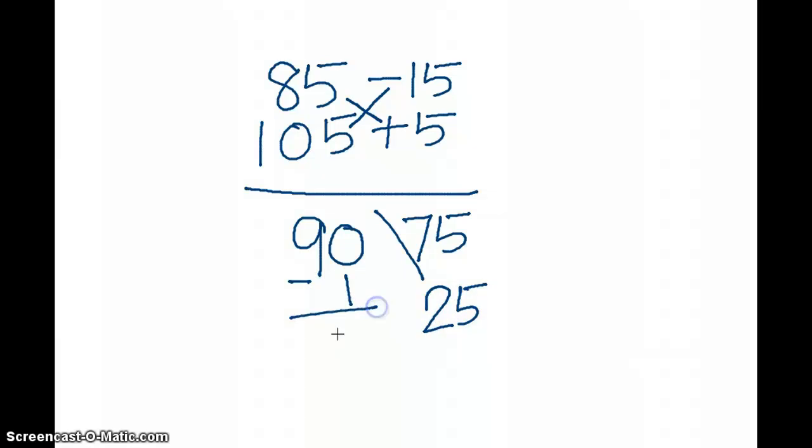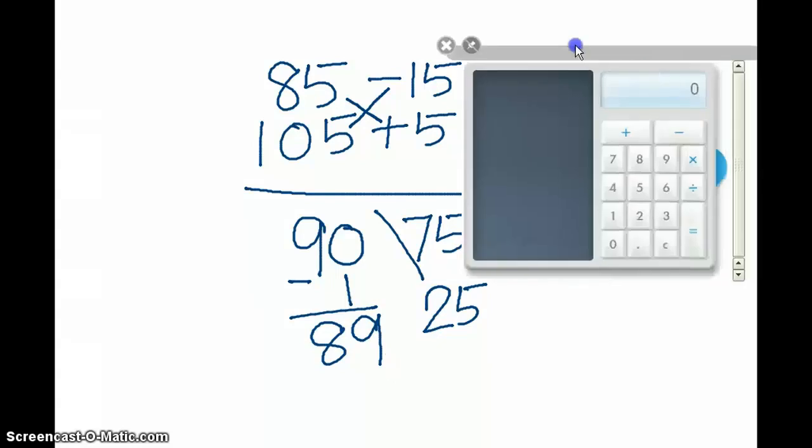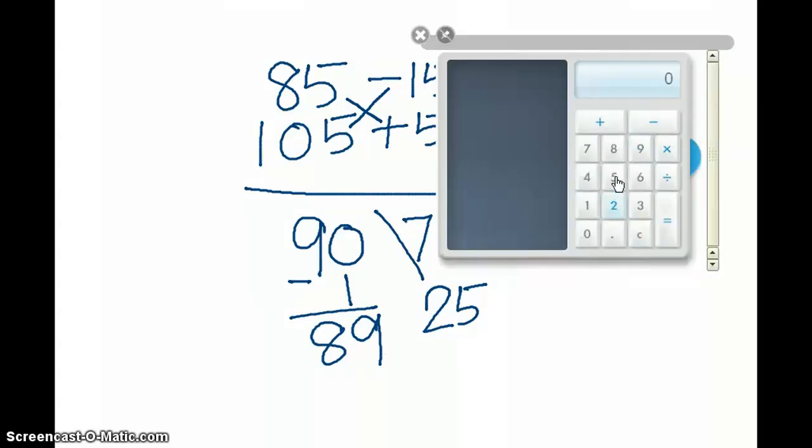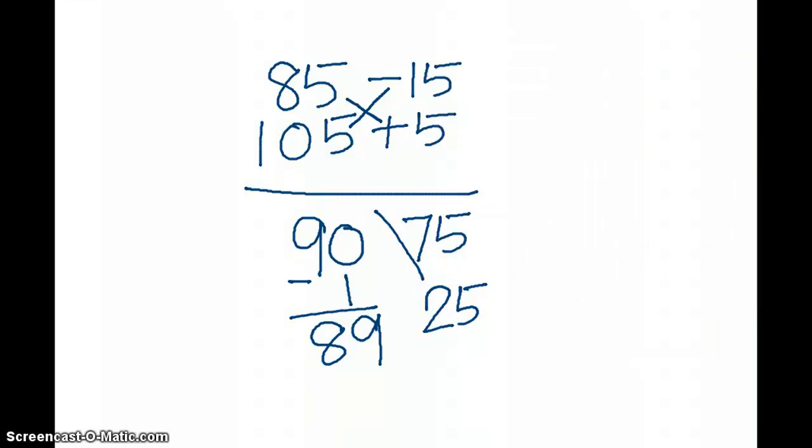So the answer is 8925. Let's check this out. 85 into 105, which gives me 8925. That's all. So that's all is the technique here.